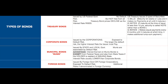Foreign bonds are issued by foreign governments or foreign corporations. Foreign corporate bonds are exposed to default risk, and so are some foreign government bonds. An additional risk exists if the bonds are denominated in a currency other than the investor's home currency. For example, if a US investor purchases a bond denominated in Japanese yen and the yen subsequently falls relative to the dollar, the investor will lose money even if the company does not default.